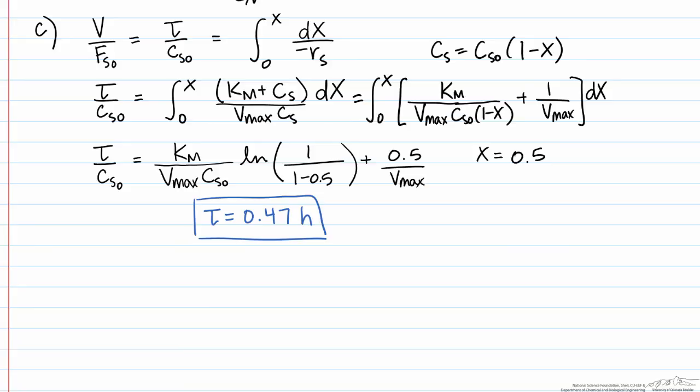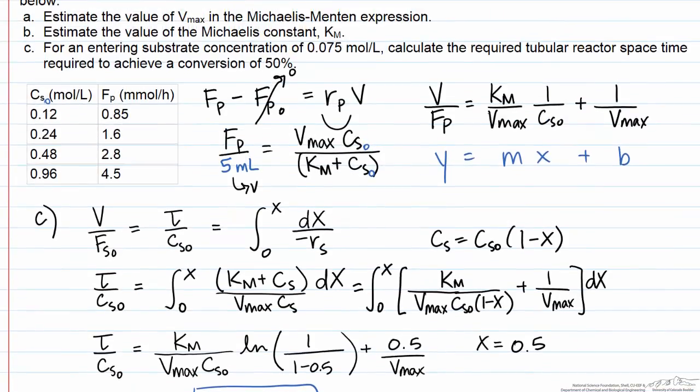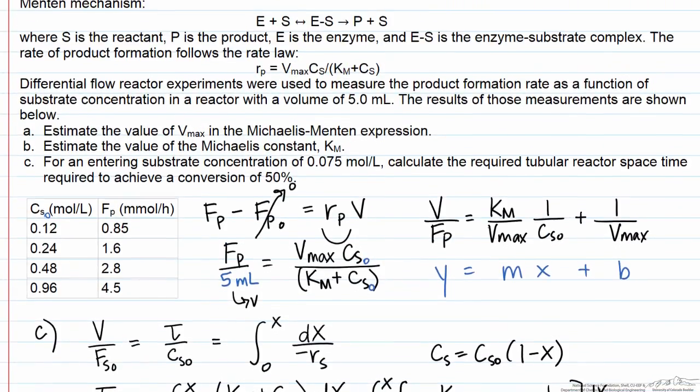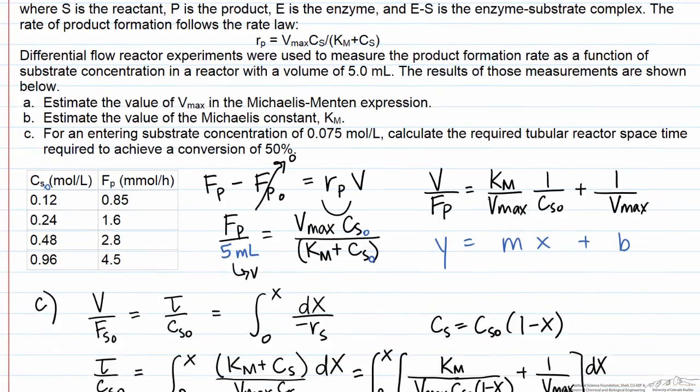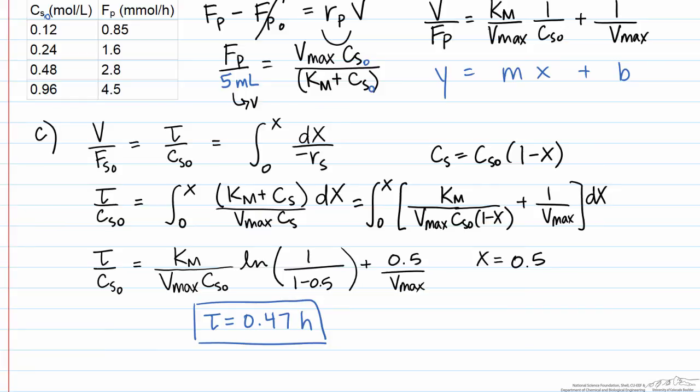To sum up this problem, we see that we can use kinetic data for a differential reactor that is not in itself industrially useful because you're converting so little reactant to product, but what's useful is that it lets you assume that the reaction rate is uniform everywhere in the reactor, so that the analysis of the experiments is straightforward. And then we actually took those kinetic parameters in order to design a reactor that could be useful that would achieve a quantitative conversion of 50%.